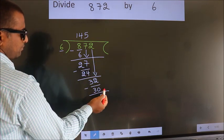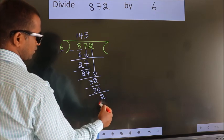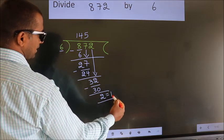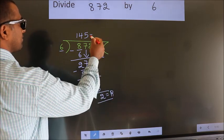No more numbers to bring it down. So we stop here. This is our remainder. This is our quotient.